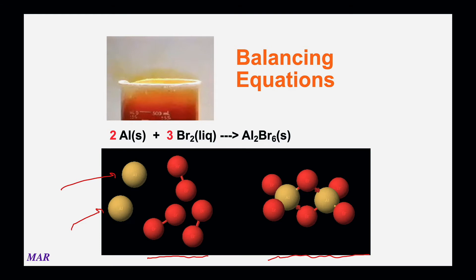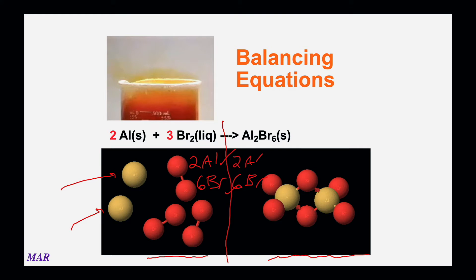You want to make sure the atoms are the same on the left and the right. One thing I do when I get stuck: I literally write a line down the middle between the reactants and products. Two aluminums on the left, two on the right; six bromine atoms on the left, six on the right. If both sides are equal, you have a balanced reaction. This way of checking your balance is totally cool — I highly recommend it if you ever get stuck.